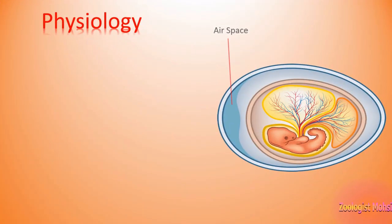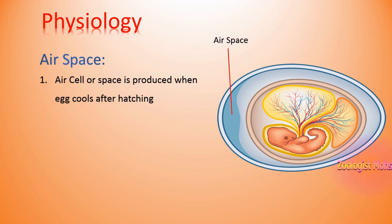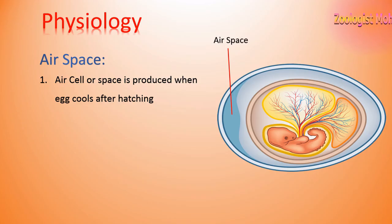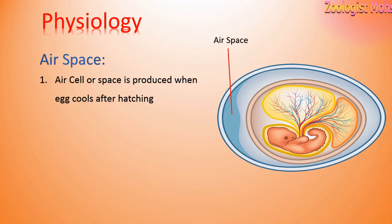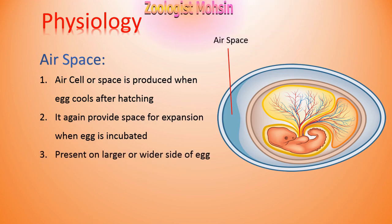The next structure is the air space or air cell. It is produced when the egg cools after laying. Due to the physical phenomenon that substances contract when cooled, the egg material contracts and an air cell forms on the larger side of the egg. It provides space for expansion when the egg is incubated.